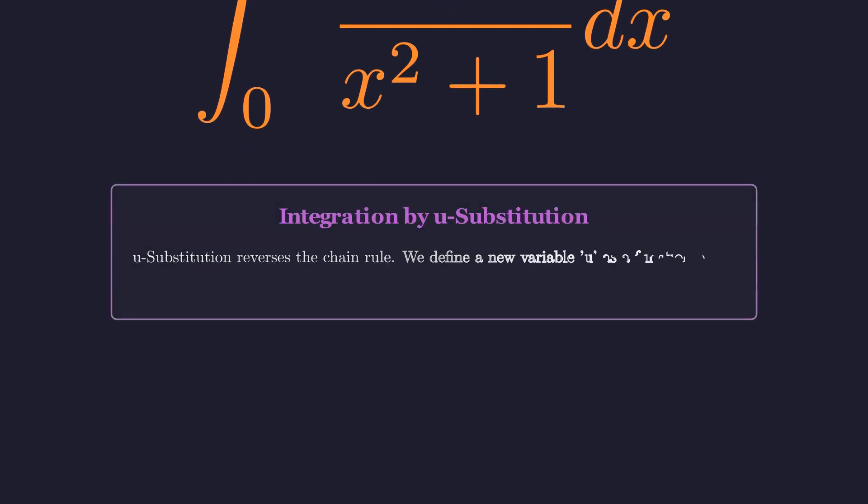Now for the second integral, the remainder term. This one calls for substitution. U substitution is essentially the chain rule in reverse. We introduce a new variable u as a function of x, transforming the integral into something more standard.